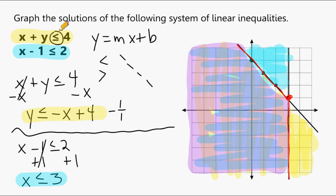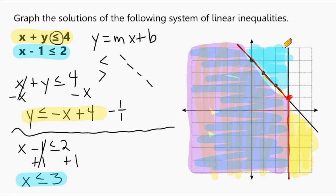If we were to solve this system of inequalities, we would get an ordered pair located where the two lines intersect, which is at positive 3, positive 1 — right here in quadrant number 1.